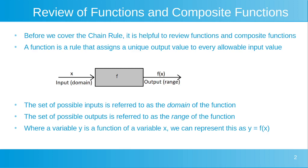Before we cover the chain rule, it's helpful to review functions and composite functions. A function is a rule that assigns a unique output value to every allowable input value, represented here in this diagram. We have an input value x, which is put into a function f, represented by this grey rectangle, and we get an output f(x). The set of possible inputs is referred to as the domain of the function, and the set of possible outputs is referred to as the range of the function. Where a variable y is a function of a variable x, we can represent this as y is equal to f(x).